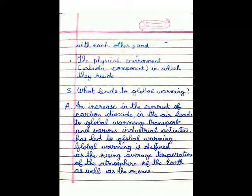Question 5: What leads to global warming? Answer: An increase in the amount of carbon dioxide in the air leads to global warming. Transport and various industrial activities have led to global warming. Global warming is defined as the rising average temperature of the atmosphere of the earth as well as the oceans.